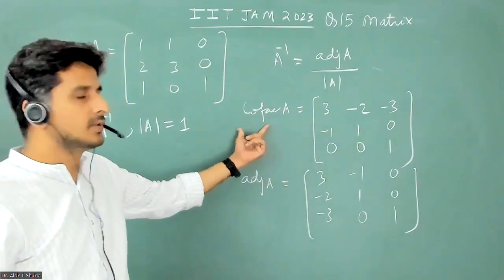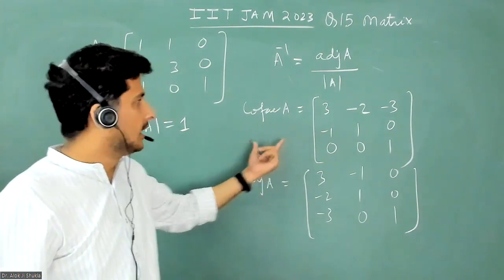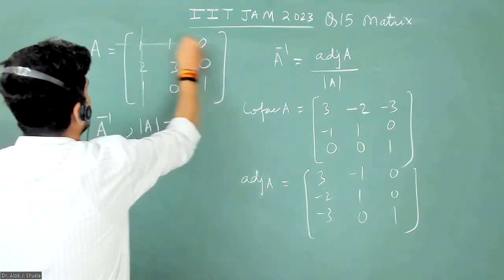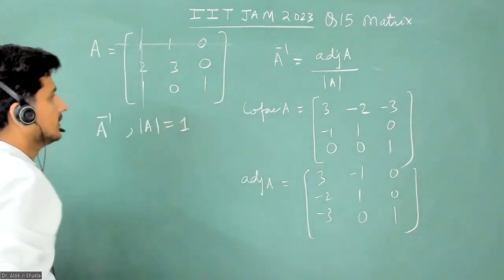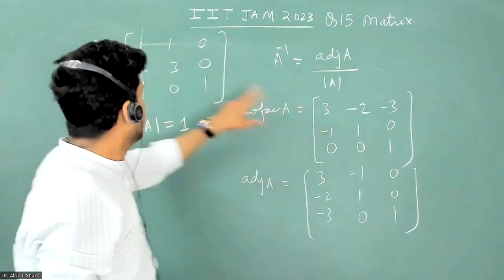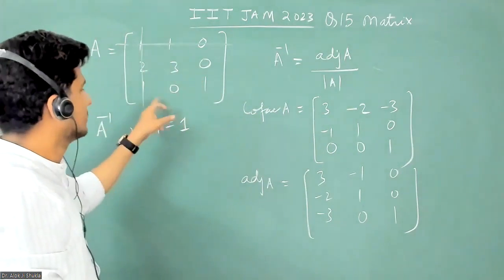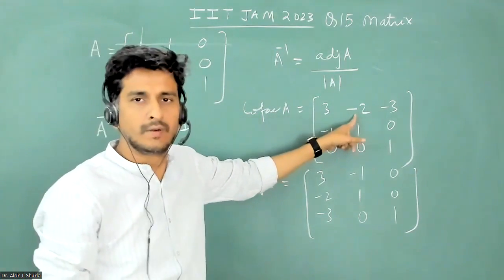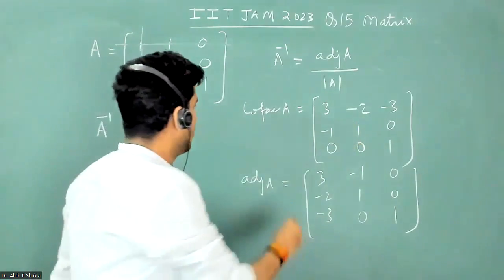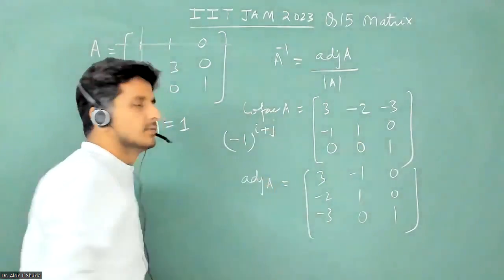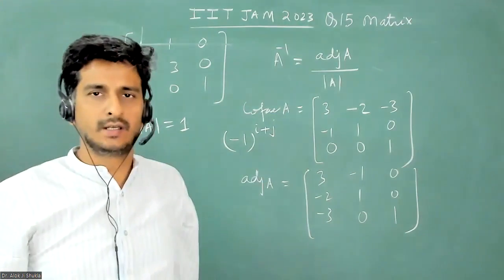The first step is to get the cofactor matrix. For this element, it will be 3 minus 0, which is 3. For the next element, you cover this row and column: 2 minus 0, so it will be minus 2 because you have to take care of the sign, which is given by minus 1 to the power of i plus j.